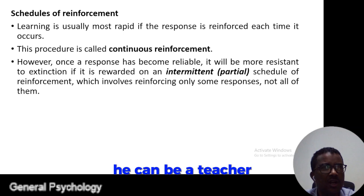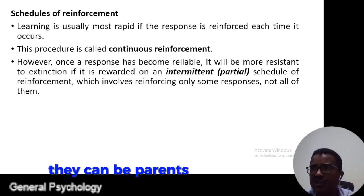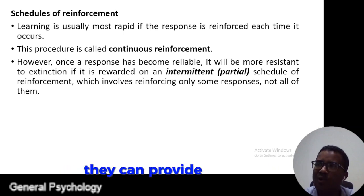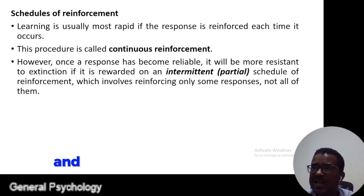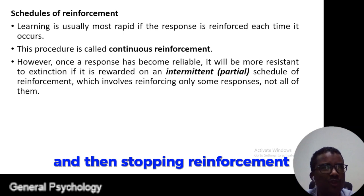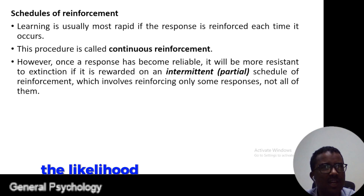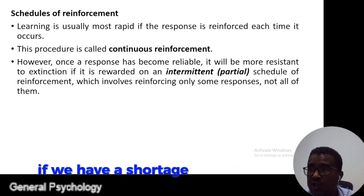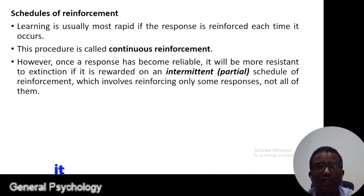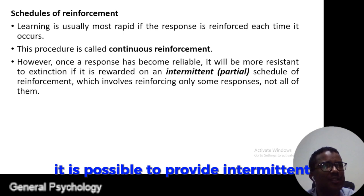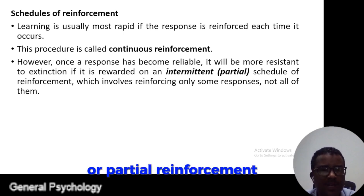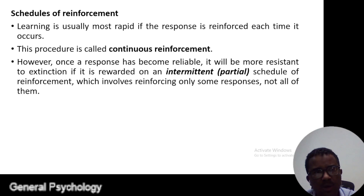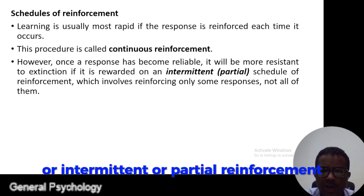The rewarder can be a teacher or parents — whoever they are — they can provide continuous and then stopping reinforcement in order to enhance or initiate the likelihood of that specific behavior. On the other hand, if we have a shortage of praise or reward, it is possible to provide intermittent or partial reinforcement. We can use either continuous or intermittent reinforcement.